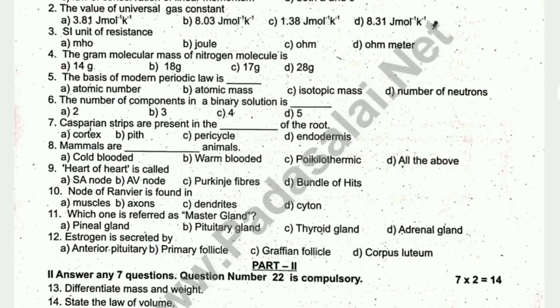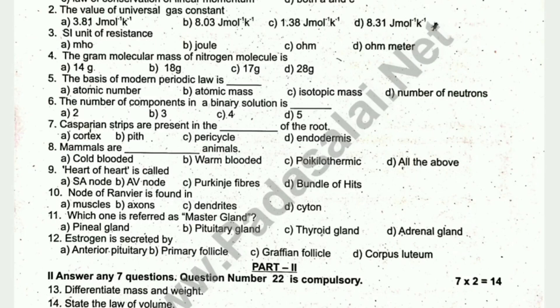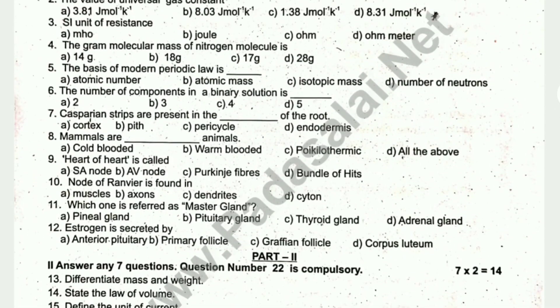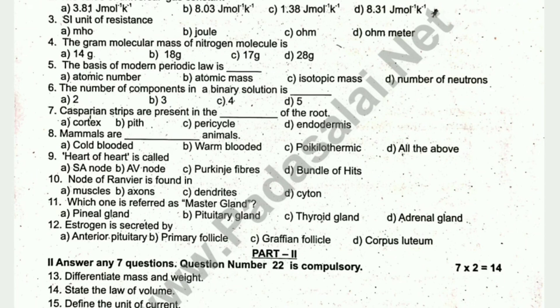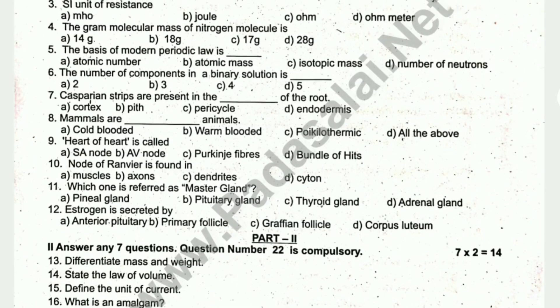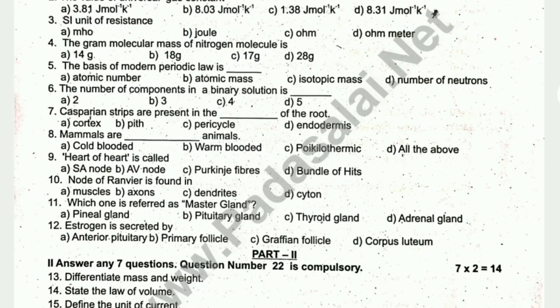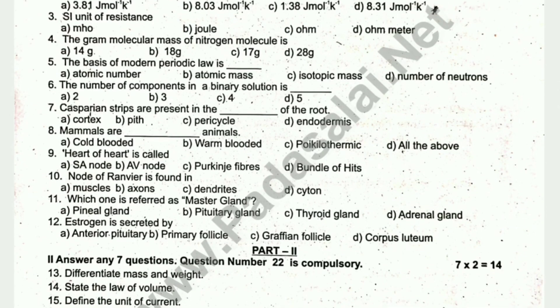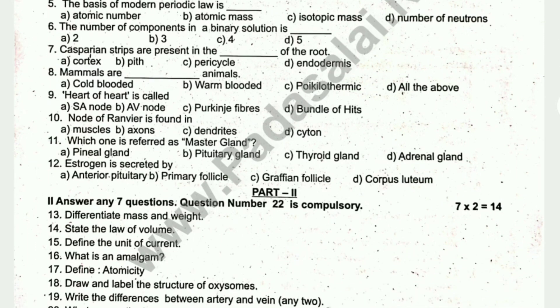There are 75 marks in this question paper. The first section is Choose the correct answer — 12 questions. Topics include: the principle used to project rockets, the value of the universal gas constant, SI unit of resistance, mammals as warm-blooded animals, the SA node as the pacemaker of the heart, Node of Ranvier, and estrogen secreted by the Graafian follicle.